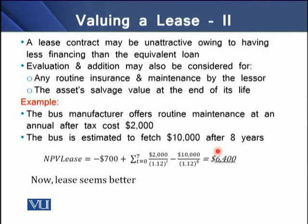When we determine the net present value of this lease contract incorporating these factors, it comes to $6,400. The lease, which was earlier showing a negative $700 for the lessee, is now offering a positive net present value of $6,400. A lease contract may be unattractive owing to less financing than the equivalent loan, but to make it an attractive option for the lessee, additional considerations such as routine maintenance, insurance expense offered by the lessor, or a salvage value at the end of the asset's life can be factored in.